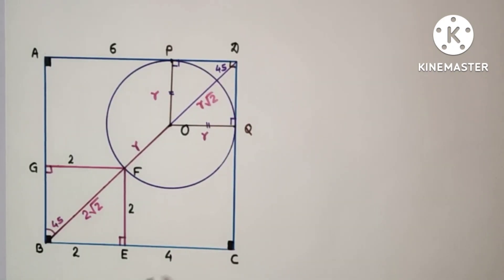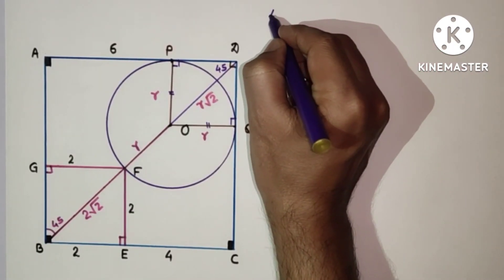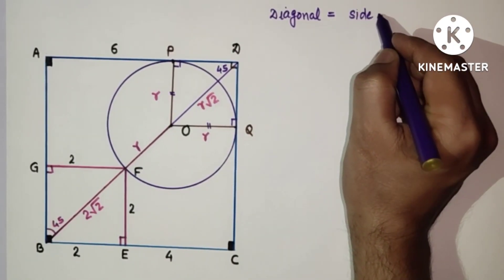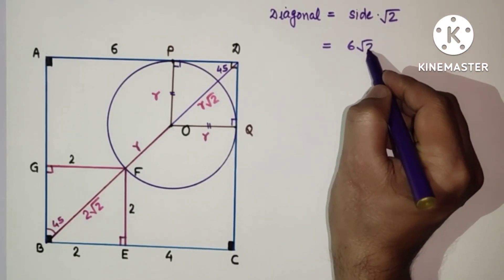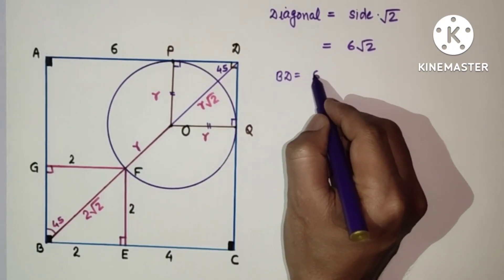Since the side of the bigger square is 6 units, so this is 6, this is 6. So BD is equal to 6 root 2.